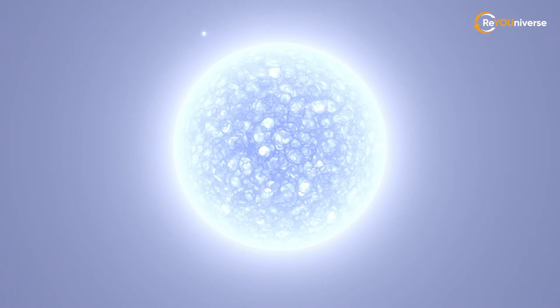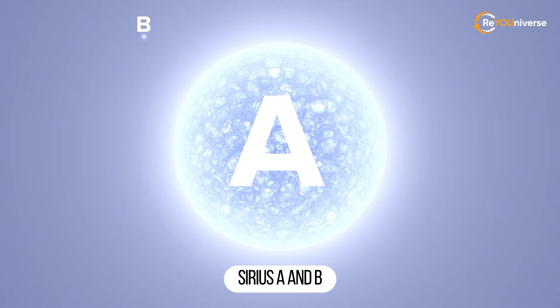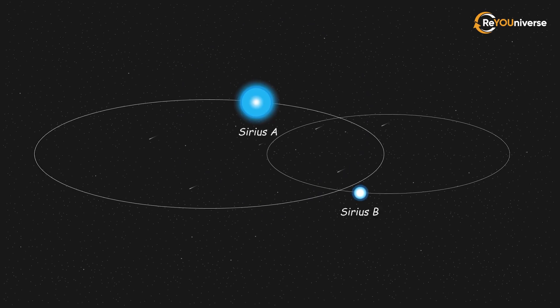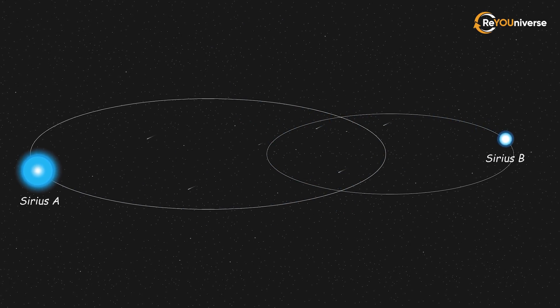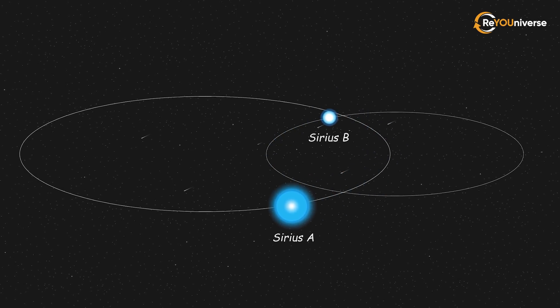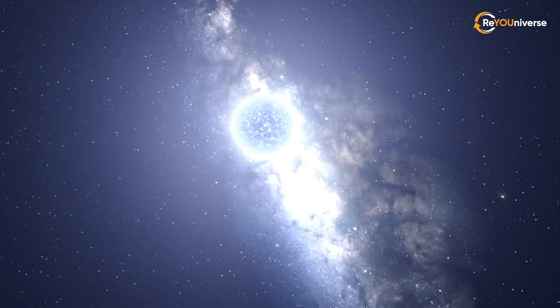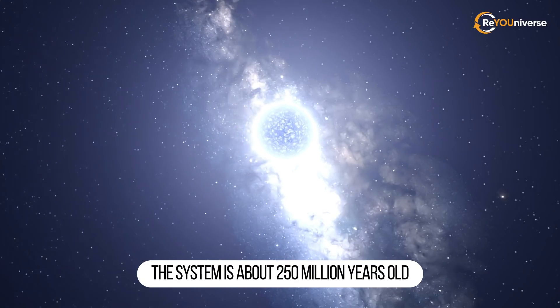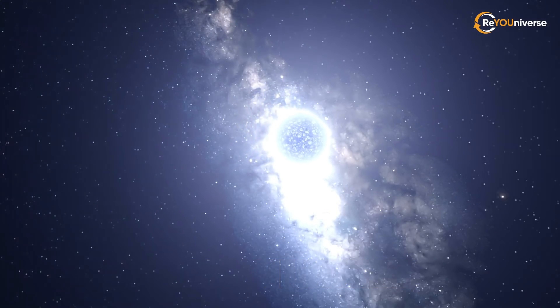Sirius is not one celestial body, but two. They are traditionally called Sirius A and B. They revolve around the mass center. According to established data, it takes about 50 years to complete one cycle. According to scientists, the system is about 250 million years old.